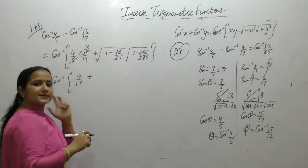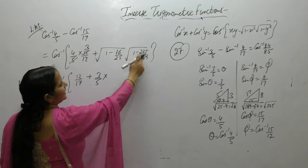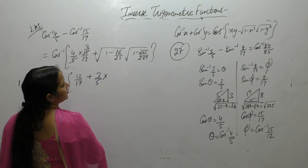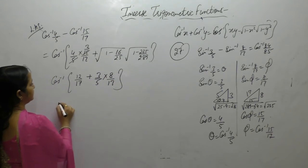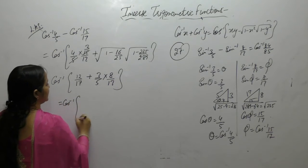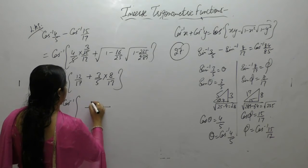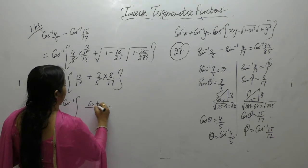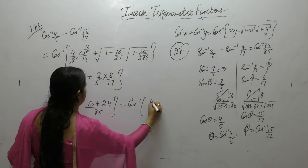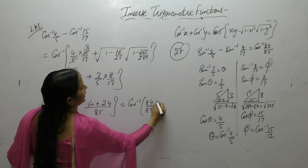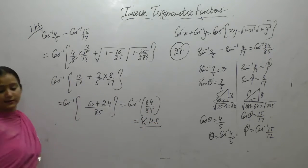25 minus 16 is 9, so 3/5. 289 minus 64 is 225, so 8/17 upon 17. cos⁻¹(17×5): 8×3 is 24. So we get cos⁻¹(84/85), which equals the right hand side.